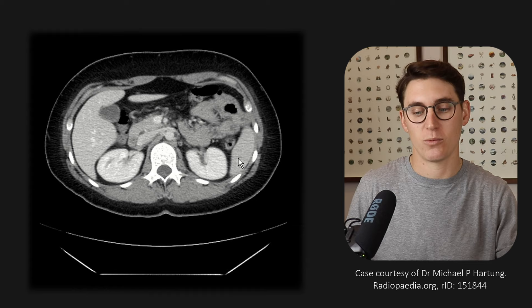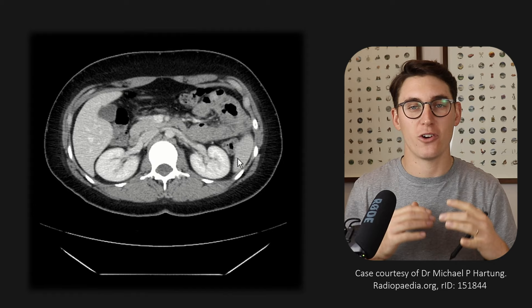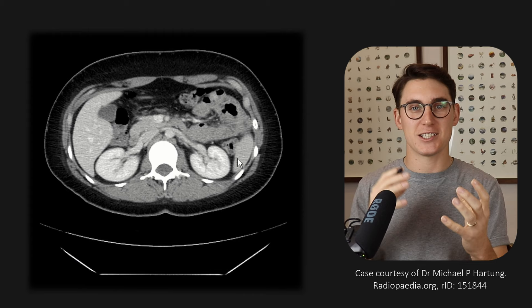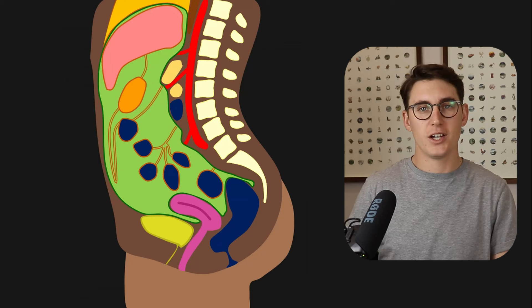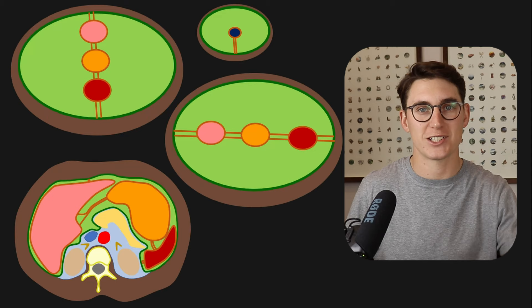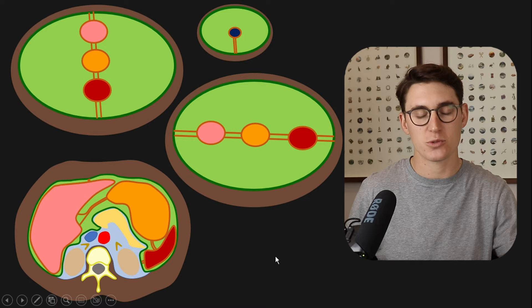Now we've done a basic rundown of the abdomen on axial CT slices. Now I'm going to show you how we can separate this peritoneum into different spaces that become clinically important and matter when we're writing reports on our CT abdomen. We can see our sagittal section, and we're going to go across into an axial section. I first want to talk about the foregut and how it rotates in utero.